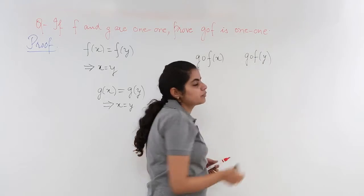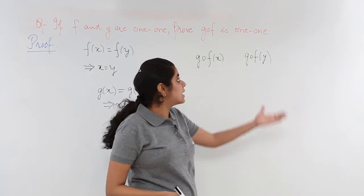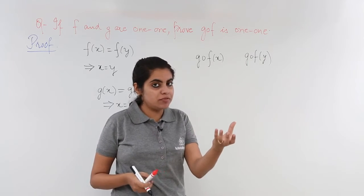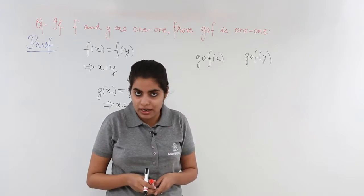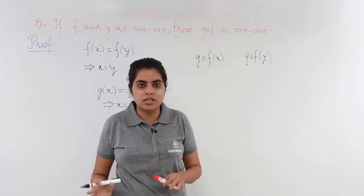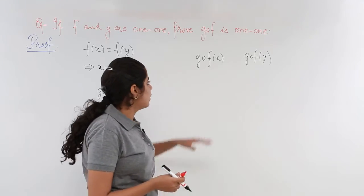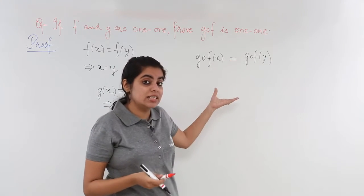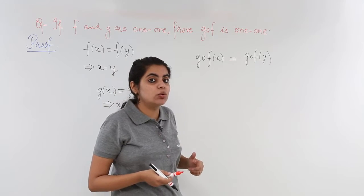Now if we have to prove this as one-one, there must be something as gof(x) is equal to gof(y). That implies we can solve using these equations. So if gof(x) is equal to gof(y), we take this, and in the end if we reach x is equal to y, that means my function gof is a one-one function.